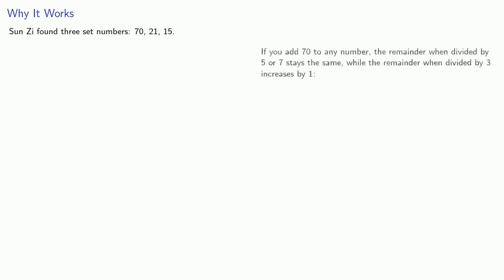Sun-Zi found three set numbers: seventy, twenty-one, and fifteen. The key property is that if you add seventy to any number, the remainder when divided by five or seven stays the same, while the remainder when divided by three increases by one.